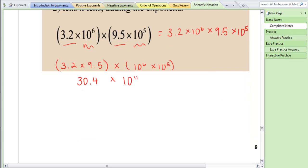Now is this written in scientific notation? No, because we need to have only one digit to the left of the decimal. So I'm going to have to move that decimal over one place so that becomes 3.04. Now you have to think about the exponent—it's going to increase by one because we moved our decimal one place.